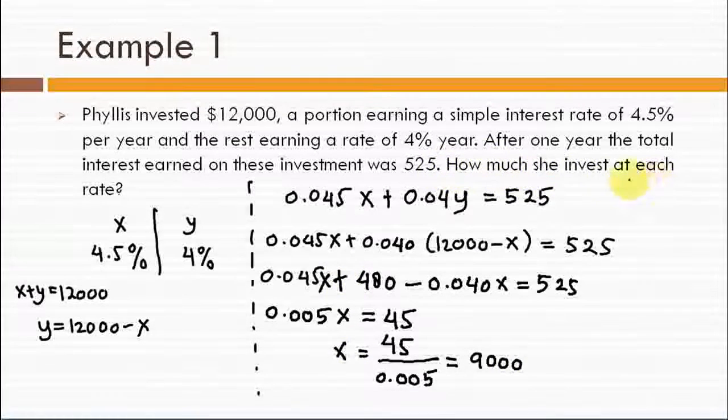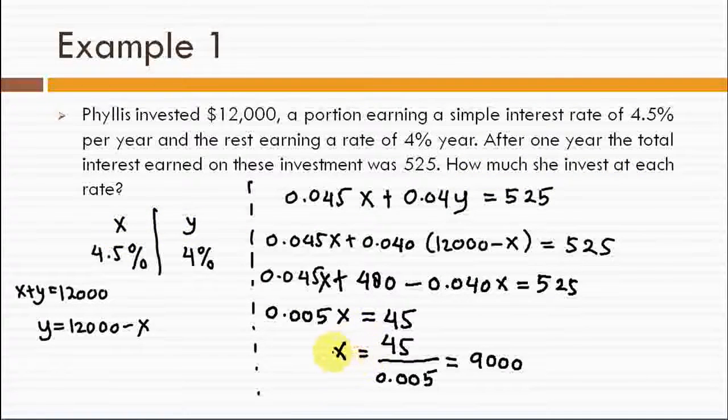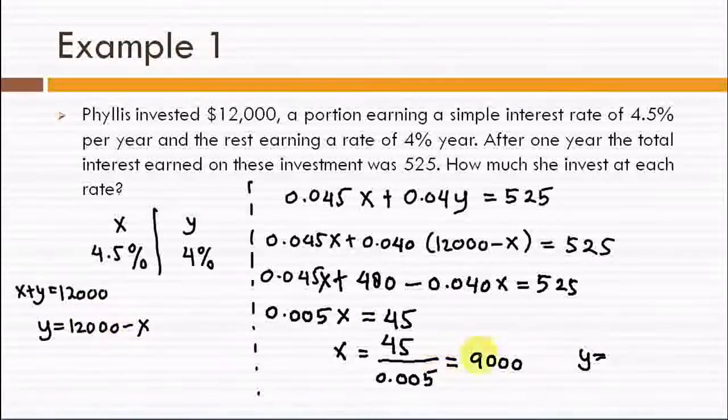Remember that we are looking for x and y. Now we solve this for x then to find y we just need to substitute this x equal to 9000 here. Therefore, y is equal to 12000 minus 9000 which is 3000.